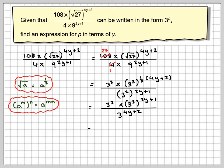Now applying that again here to this situation, we're going to get 3 times 2, which is 6y, and 3 times 1, which is 3, all over 3 to the 4y plus 2.